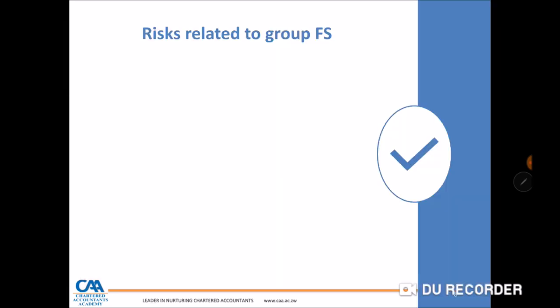As you know, ISA audit is a risk-based audit, and so we look at high risk or key risk areas of group financial statements. One area is complex accounting issues, which arise from the need to consolidate. Consolidation requires elimination of unrealized profit and inter-group sales and purchases. If those are not dealt with appropriately, there is a significant risk that the group financial statements will be materially misstated.